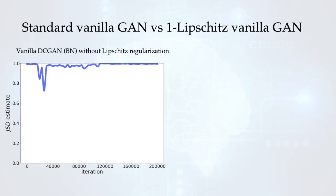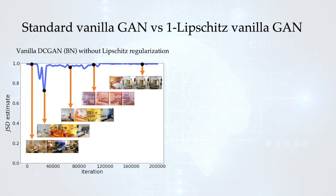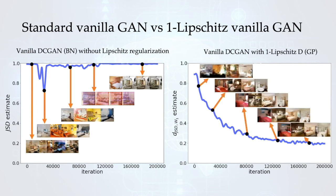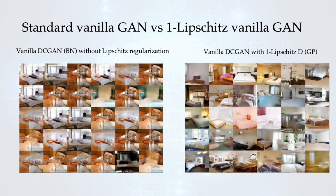We performed several numerical experiments to show the benefits of minimizing the hybrid divergence over the Jensen-Shannon divergence. When minimizing Jensen-Shannon divergence in Vanilla DC GAN without Lipschitz regularization, the divergence estimate does not go down properly and also poorly correlates with the quality of samples generated. On the other hand, with Vanilla DC GAN with a one-Lipschitz D, the hybrid divergence decreases nicely during training and nicely correlates with the quality of samples generated. The samples generated also look much better than the case without Lipschitz regularization, which actually failed in training over the LSUN Bedroom dataset.